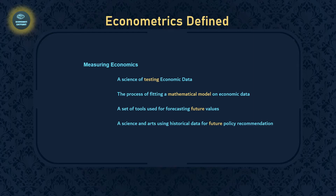The second definition is: econometrics is the process of fitting a mathematical model on economic data. A mathematical model can take two forms. The first is the graphical form, where we use an x-axis and y-axis to show the relationship between two variables — for example, income of students on the x-axis and consumption on the y-axis.